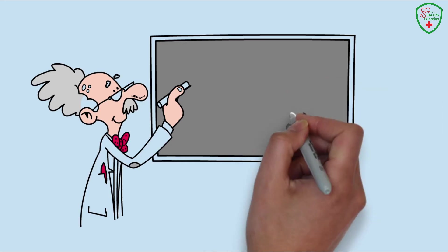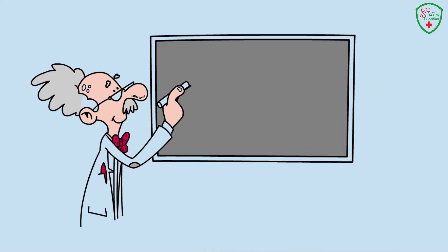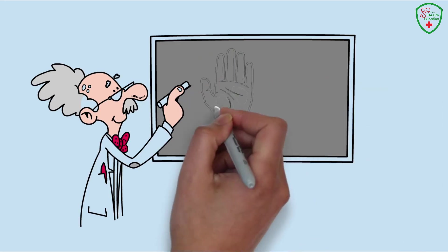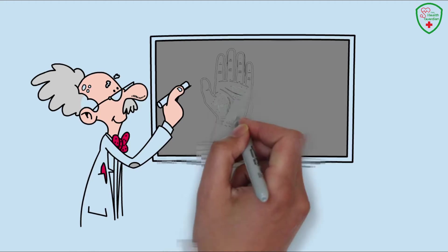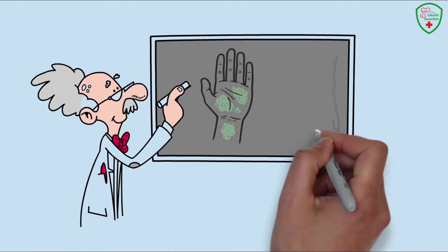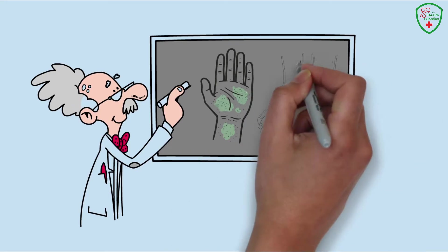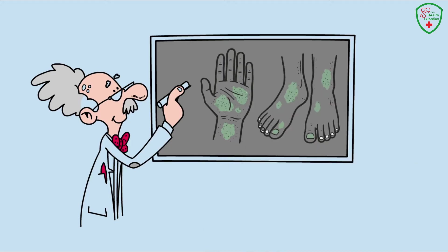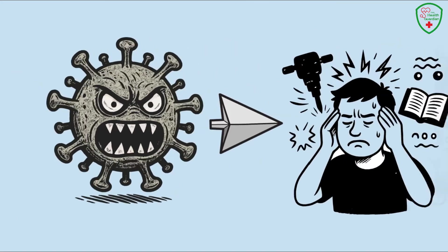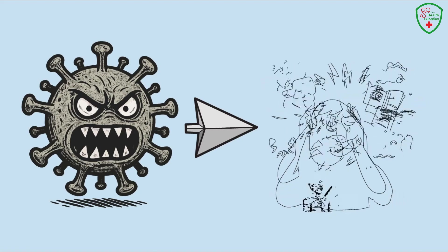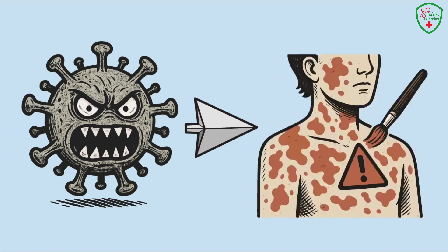Another new player in 2025 is skin changes, which we're seeing with the FLIRT variants, too. Some folks are noticing rashes, red patches, or even discoloration on their hands, feet, or other areas. It's like the virus is painting a warning sign right on your skin. These can look like anything from a mild sunburn to strange splotchy patterns that make you do a double take.